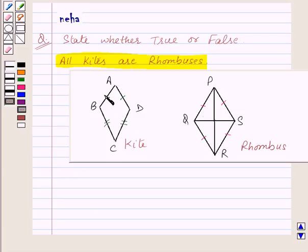So here we have that AB is not equal to BC. So that means all sides are not equal like in a rhombus. Therefore, all kites are not rhombuses, and the statement that all kites are rhombuses is false.